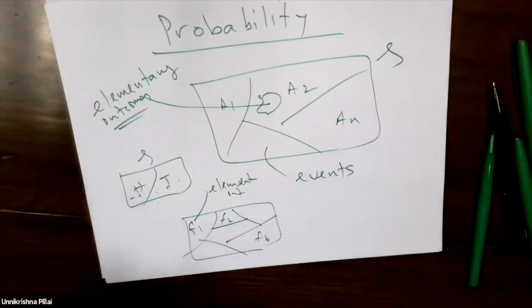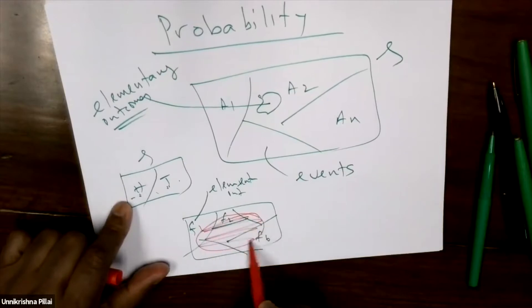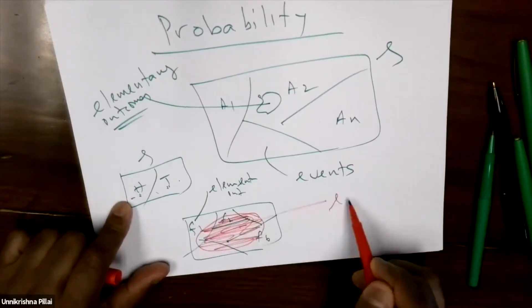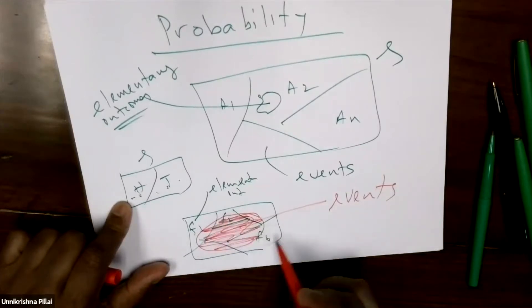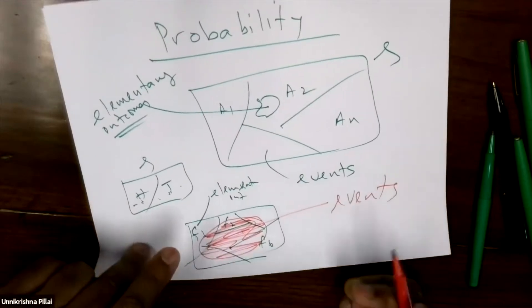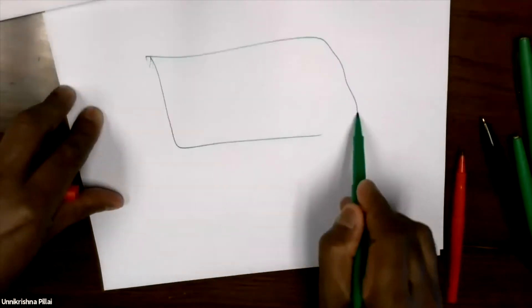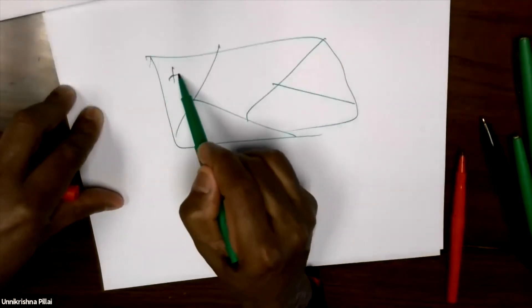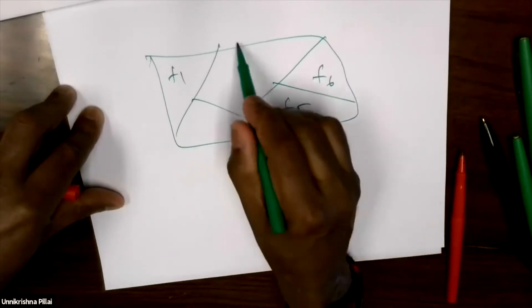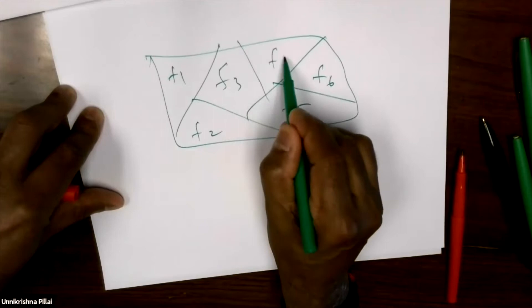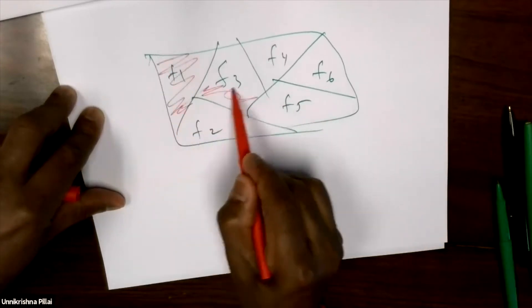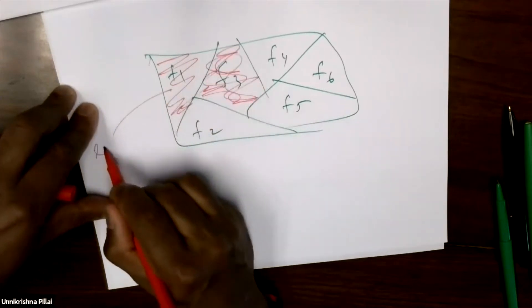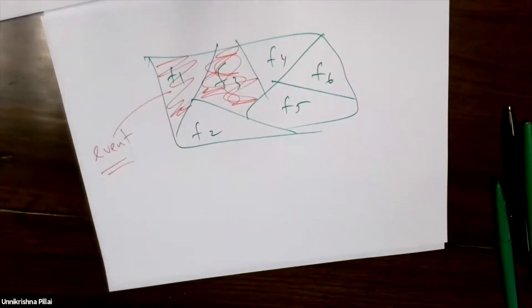We can define events — these are events which may cover several outcomes. Let me draw it here. In the case of a dice, these are elementary outcomes. If you take a collection like this, this is an event. So an event is a collection of elementary outcomes.